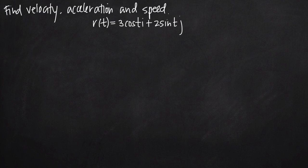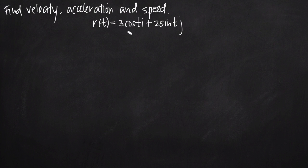Today we're going to be talking about how to find velocity and acceleration vectors and speed given a position function. In this particular problem, we've been given the position function r(t) = 3cos(t)i + 2sin(t)j.